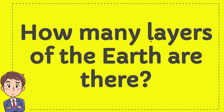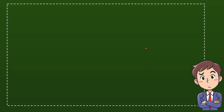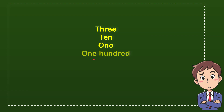How many layers of the earth are there? Now I'll give you a list of the options. The very first one is 3 layers. The second option is 10 layers. The third option is 1 layer. And the last option is 100 layers. So what do you think? Which one is the correct answer for the question?